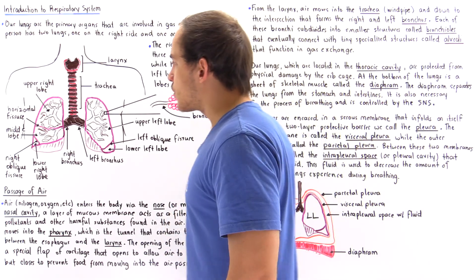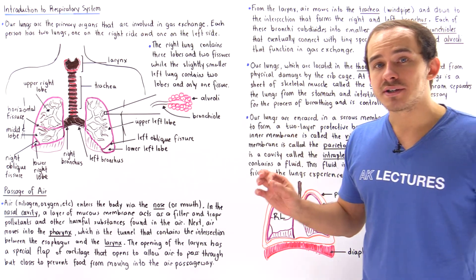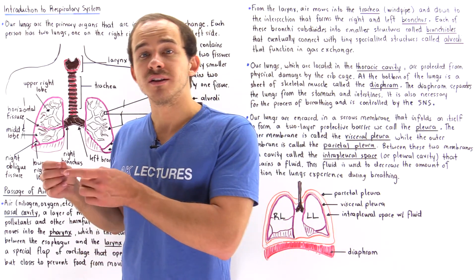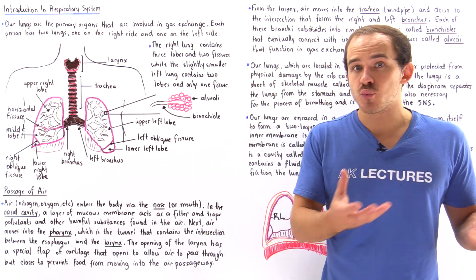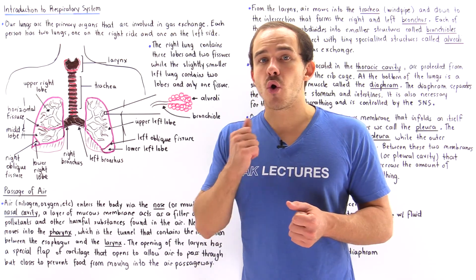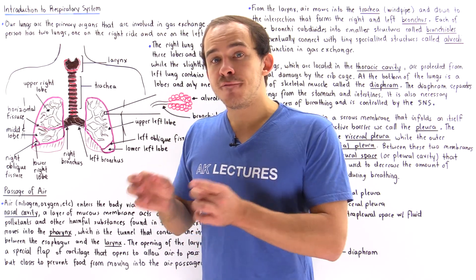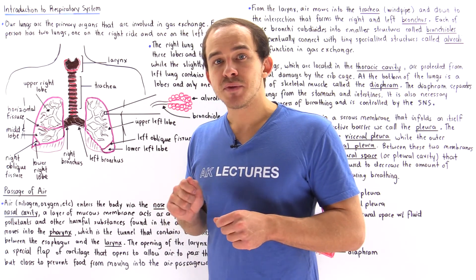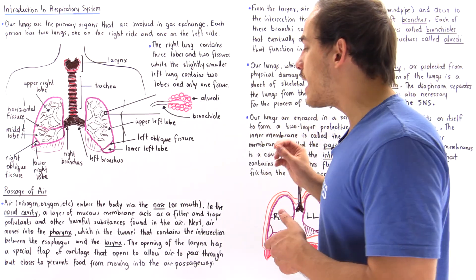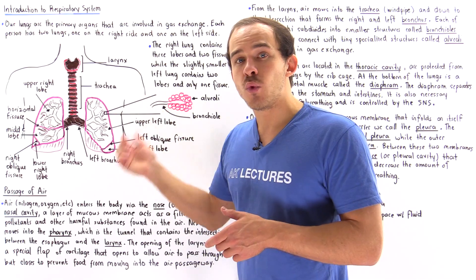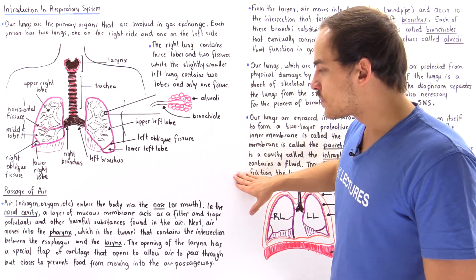Once our air passes through the nasal cavity, it enters a passageway known as our pharynx. The pharynx is the connection between our esophagus and our larynx. The larynx is the section that connects to our windpipe, the trachea, and it also contains our voice box. To prevent food from entering our trachea, the opening of our larynx contains a cartilage flap we call our epiglottis. The epiglottis is open when air passes in, but it closes when we swallow food into our esophagus.